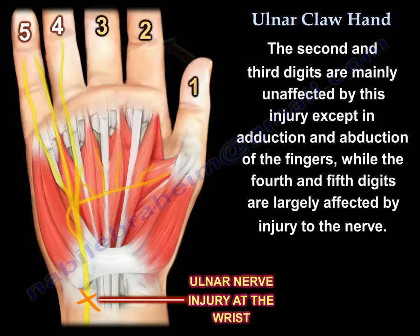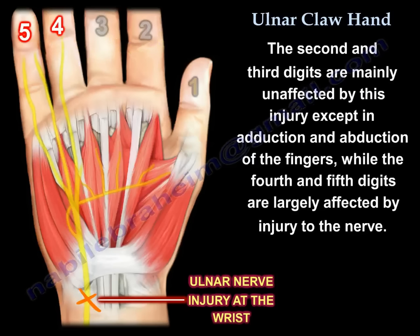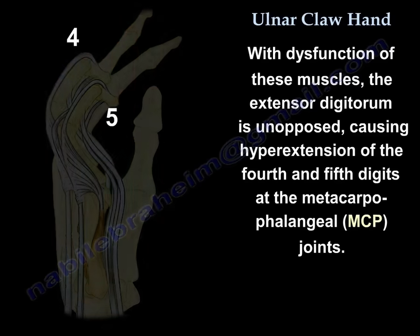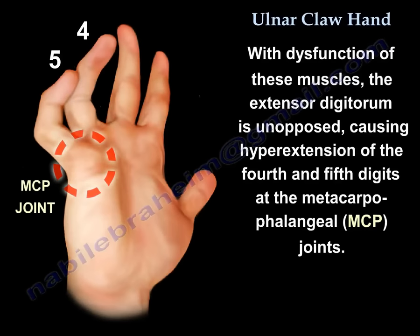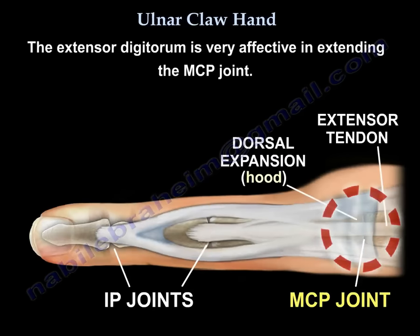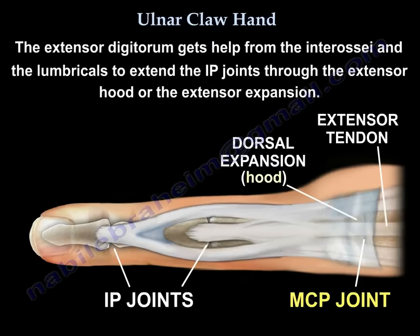The second and third digits are mainly unaffected by this injury except in abduction and adduction of the fingers, while the fourth and fifth digits are largely affected. With dysfunction of these muscles, the extensor digitorum is unopposed, causing hyperextension of the fourth and fifth digits at the MCP joints. The extensor digitorum is very effective in extending the MCP joint.